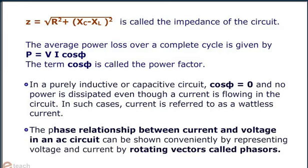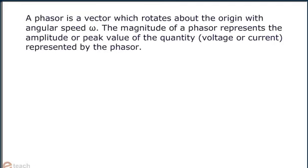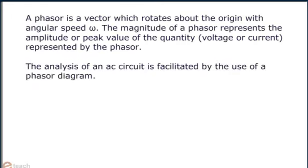The phase relationship between current and voltage in an AC circuit can be shown conveniently by representing voltage and current by rotating vectors called phasors. A phasor is a vector which rotates about the origin with angular speed ω. The magnitude of a phasor represents the amplitude or peak value of the quantity represented by the phasor. The analysis of an AC circuit is facilitated by the use of a phasor diagram.